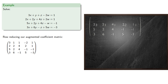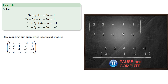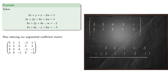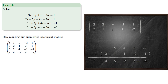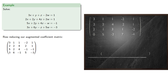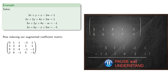Subtracting the first row from the third gives us a new third row. And subtracting the first row from the fourth gives us a new fourth row. Now that leading coefficient is the largest in its column, so we'll subtract one of the later rows. Let's subtract the second row from the first to get a new first row.